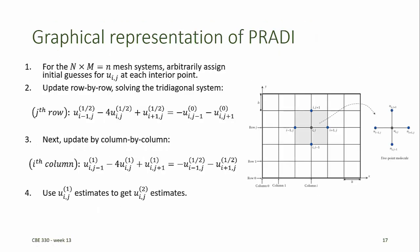The ADI method has a meaningful graphical interpretation. Suppose we have n interior mesh points and we arbitrarily assign initial guesses for each of the values u_ij at all of the interior mesh points — we might assign them all equal to the value 1. Then we set up a tridiagonal system for the unknown values of u at each interior mesh point, retaining the values corresponding to the jth row on the left-hand side and moving the values corresponding to the j plus 1th and the j minus 1th rows over to the right-hand side. These values with the superscript 0 represent our initial guesses, and the values we're solving for on the left-hand side represent the first half iteration. Once we have values for each of the unknown elements for the first half iteration, obtained by solving the corresponding tridiagonal system, we next update column by column.